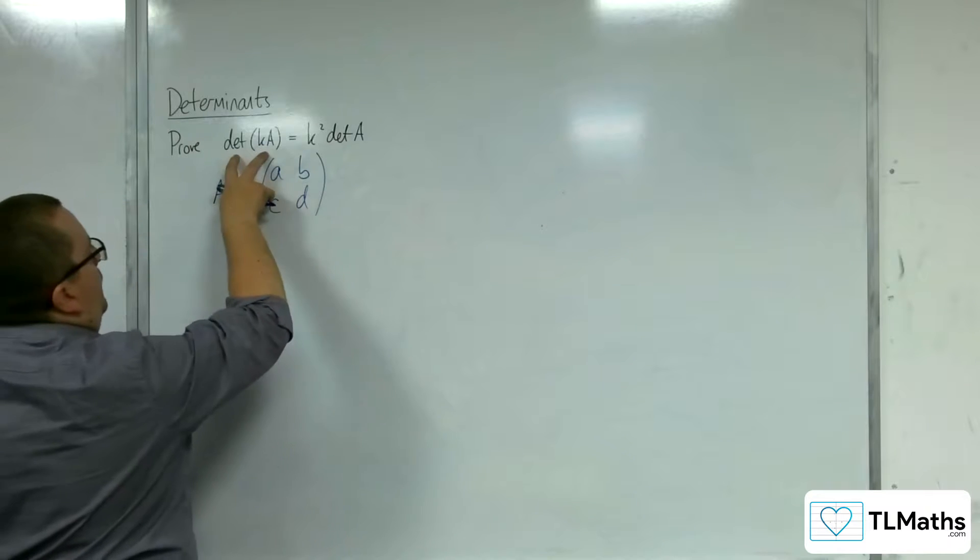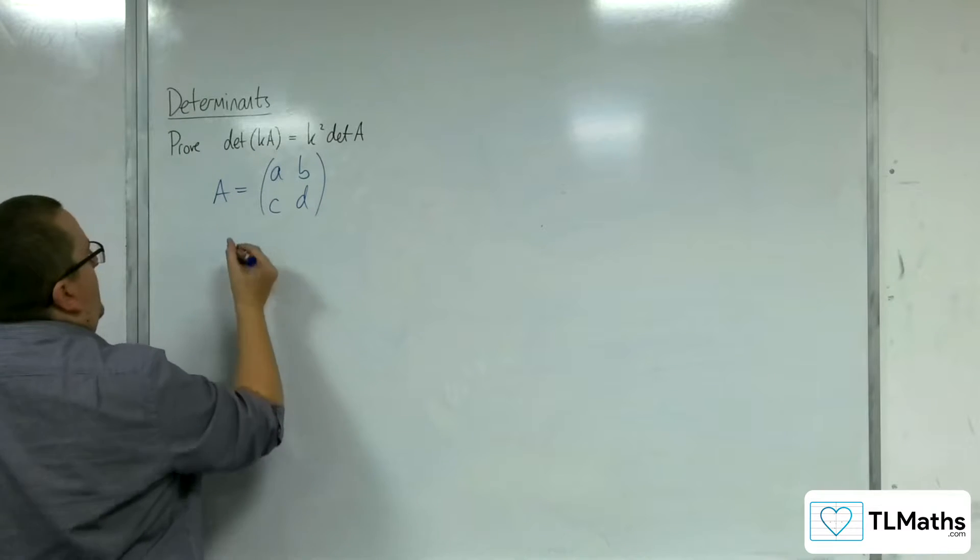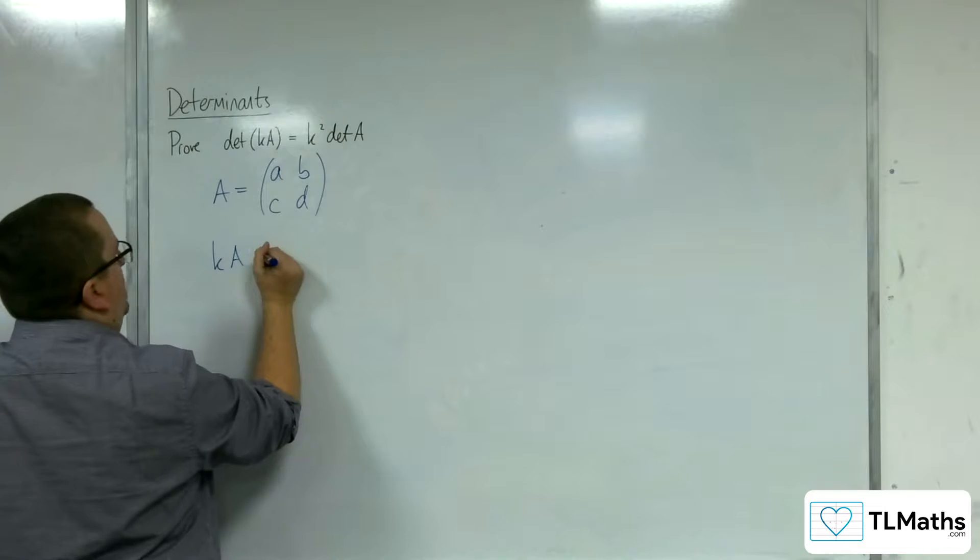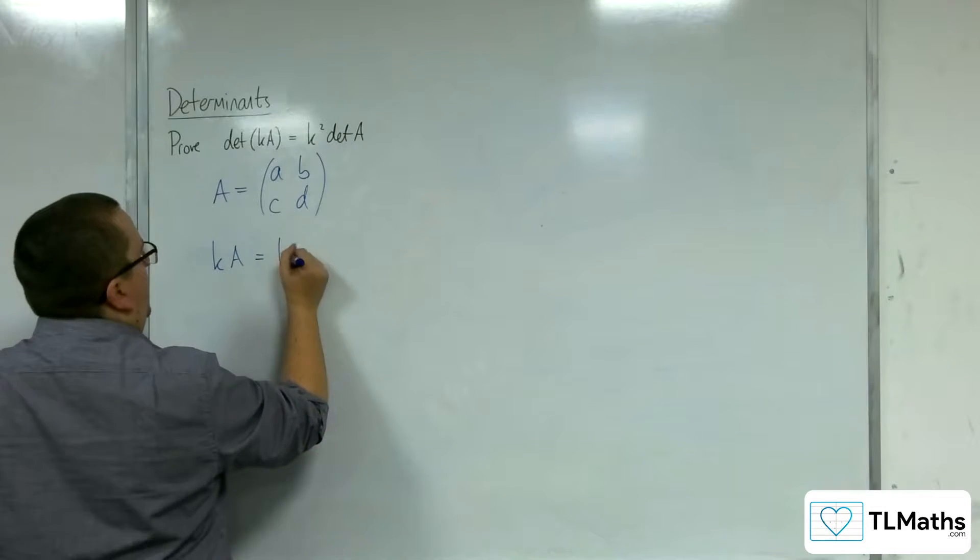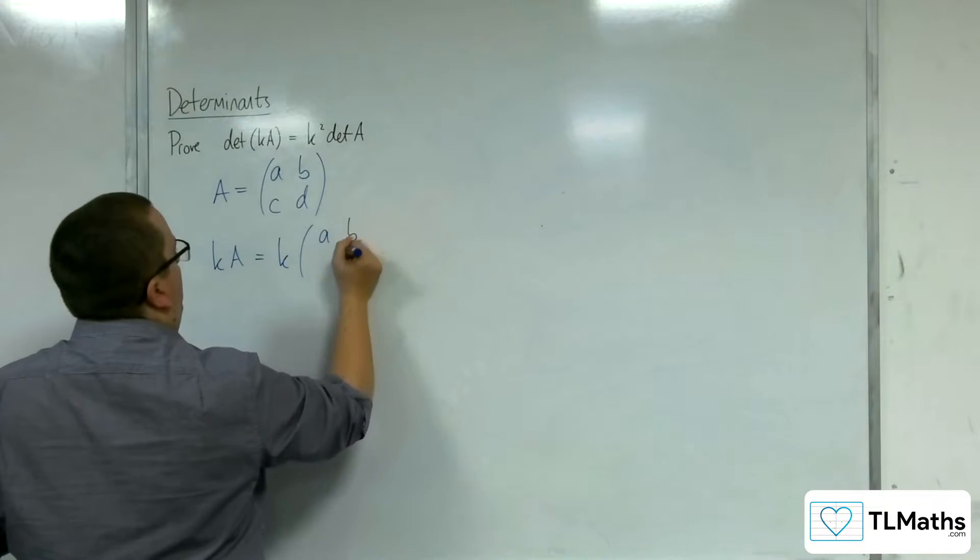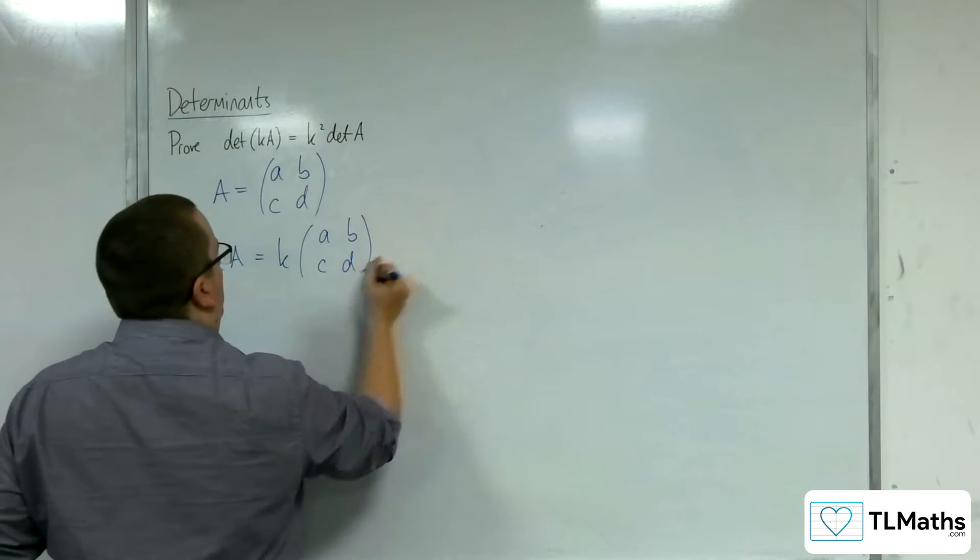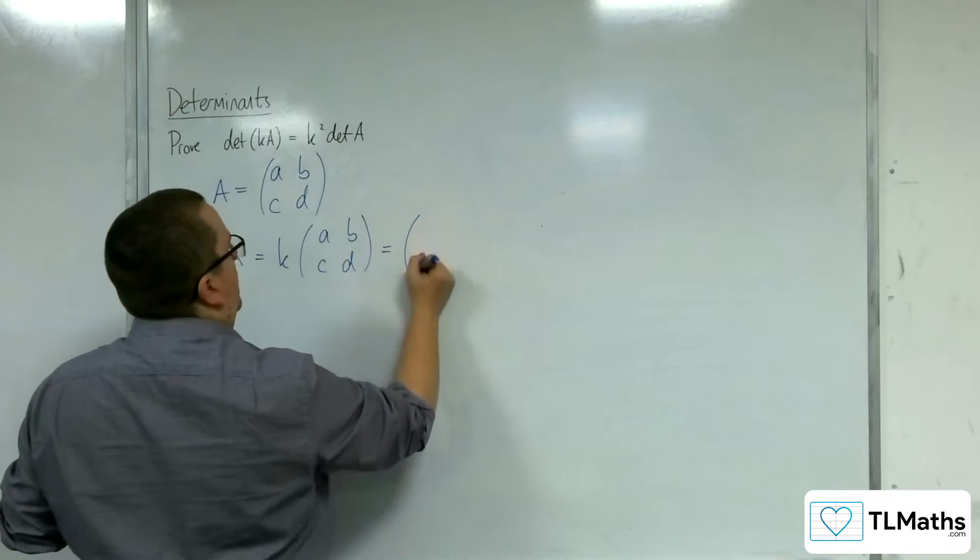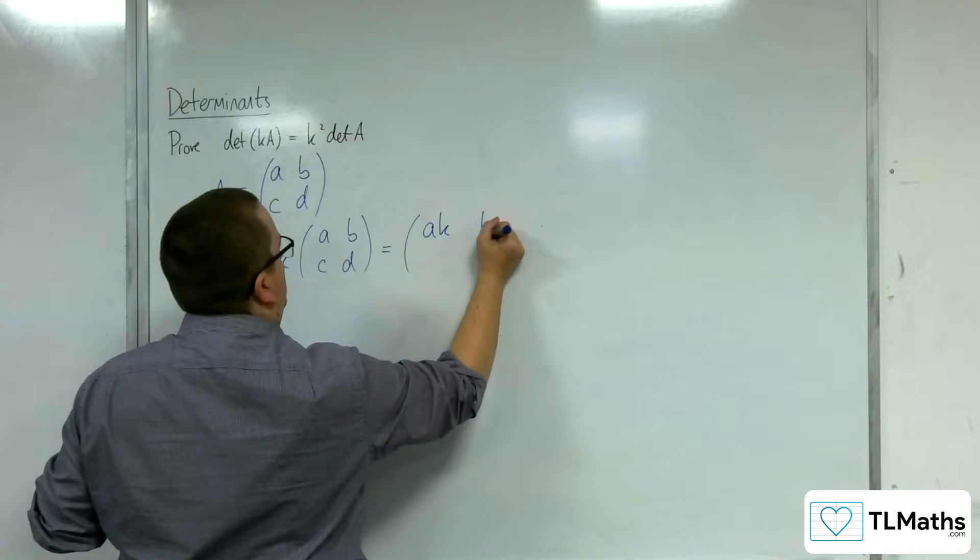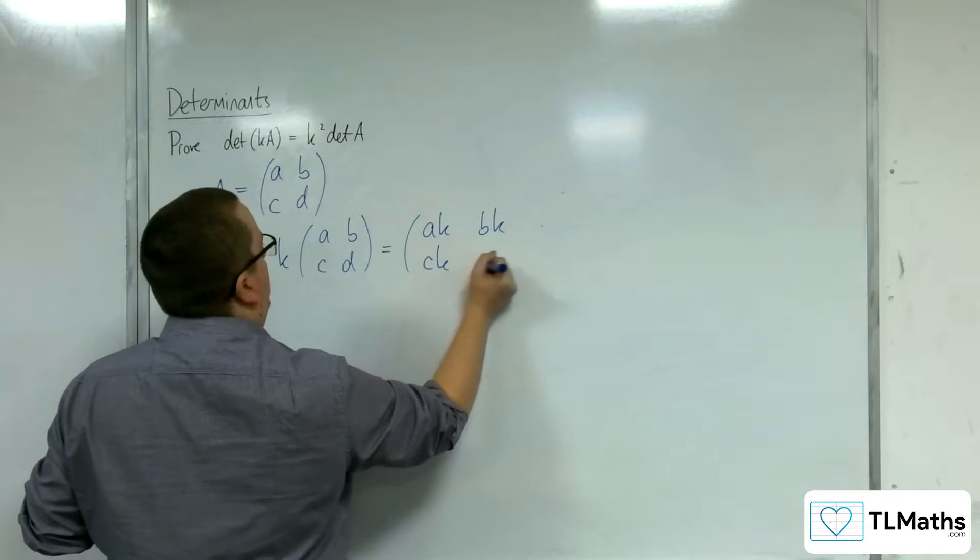So if I've got the determinant of kA, then I'm going to need to know what k times A is. And that is k times each of those elements. So I would have kA, kB, kC, and kD.